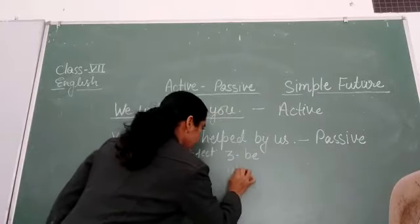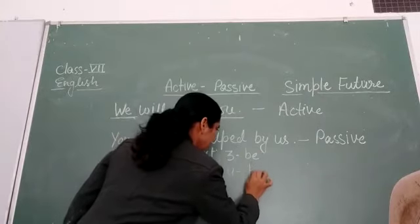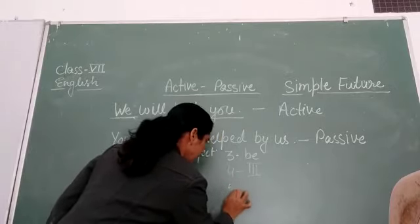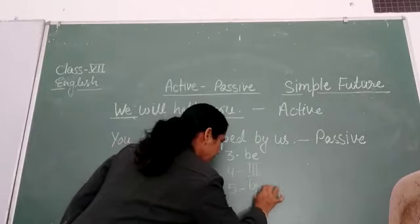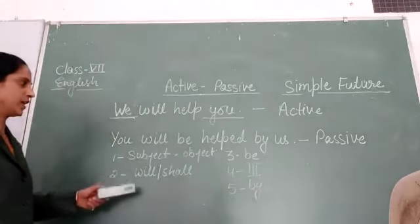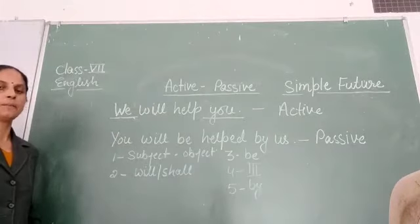Number four, third form of the verb. Number five, by. In this way, we can change the sentence into passive voice.